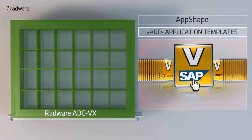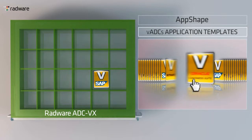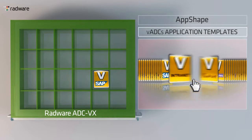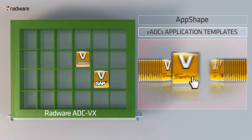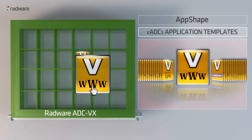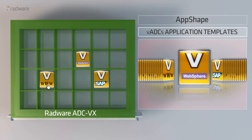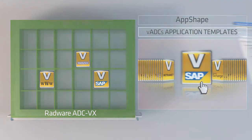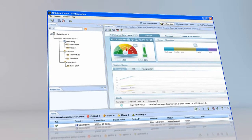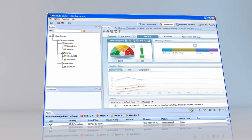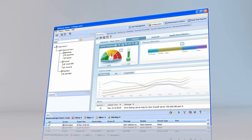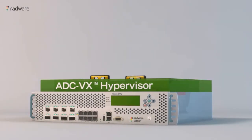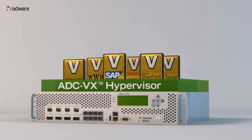To accelerate application rollout, Radware introduces AppShape, an application-centric management technology designed to expedite initial configuration and simplify application delivery operation for each application. AppShape also provides full visibility into application SLA through reporting, logging, and analytics per application.